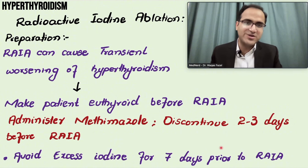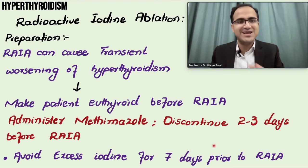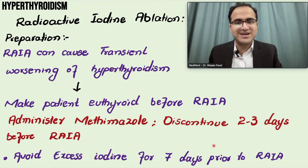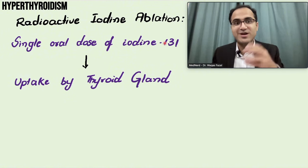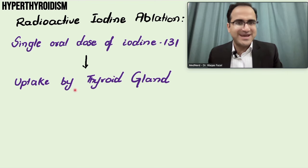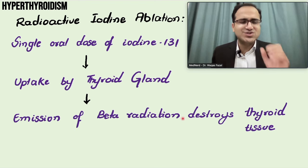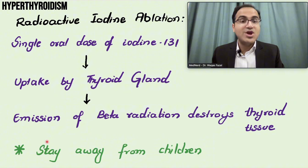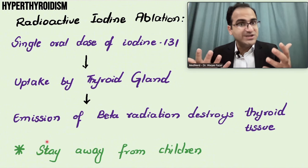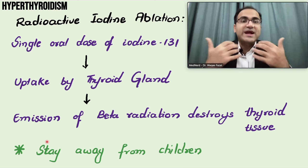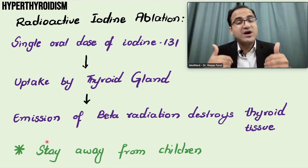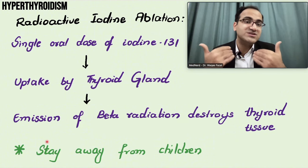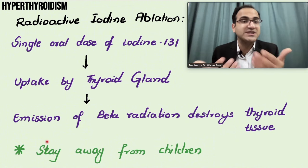Avoid excess iodine for the seven days prior to radioiodine ablation to prevent the Wolff-Chaikoff effect. A single oral dose of iodine-131 is used for radioiodine ablation - it is taken up by the thyroid gland and the emitted beta radiation destroys it. Tell the patient to stay away from children for the next few days because of radiation exposure. For example, a school teacher would need to take leave for a few days after treatment.